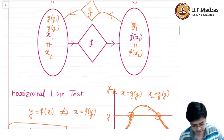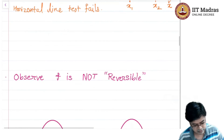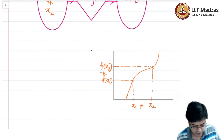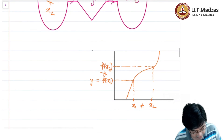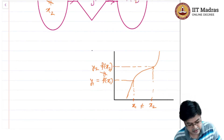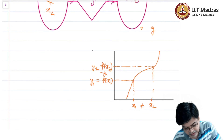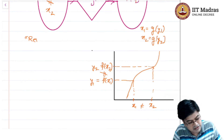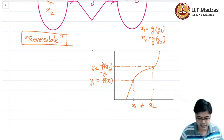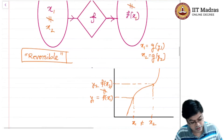What can we say about this new function? Because for x₁ not equal to x₂, f(x₁) is not equal to f(x₂), if I start with y₁ and y₂ I can easily retrace back to x₁ and x₂ — there will be some function g such that x₁ equals g(y₁) and x₂ equals g(y₂). So this function is actually reversible. We will come to this point in more detail in the next section, but remember that a one-to-one function is reversible.